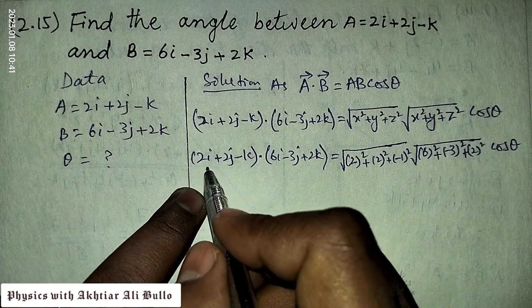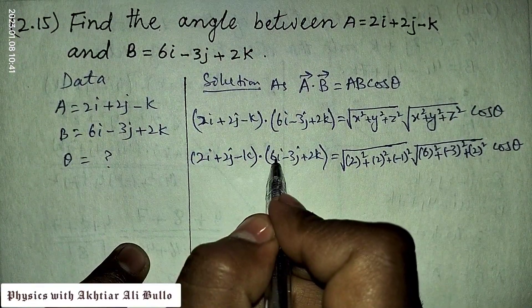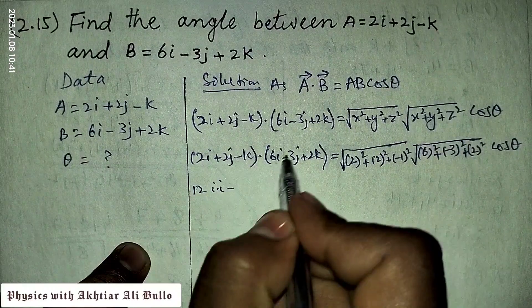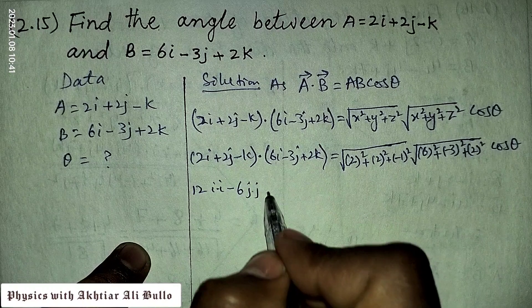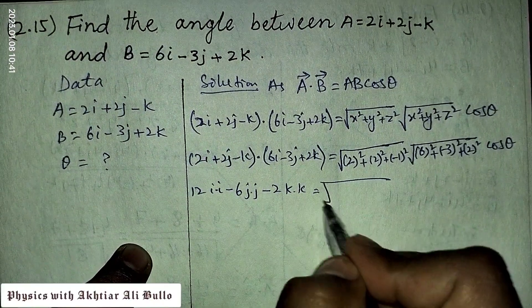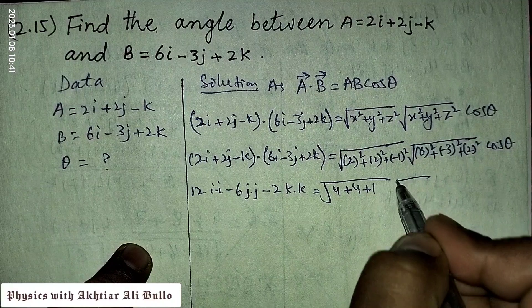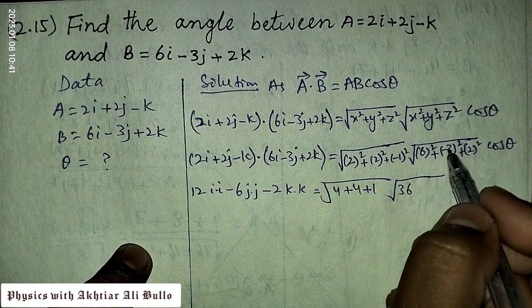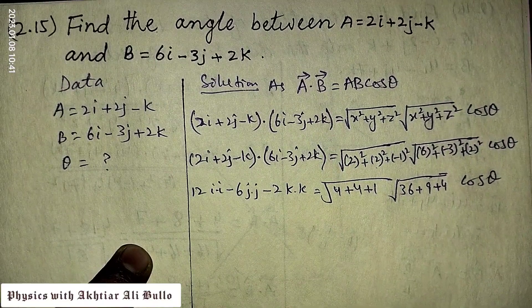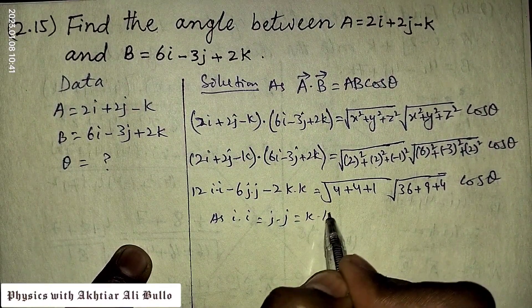To solve the dot product we multiply i with i, j with j, and k with k. So 2 times 6 gives 12 (i dot i), plus 2 times -3 gives -6 (j dot j), plus -1 times 2 gives -2 (k dot k). As we know, i dot i = j dot j = k dot k = 1, so these all equal 1.